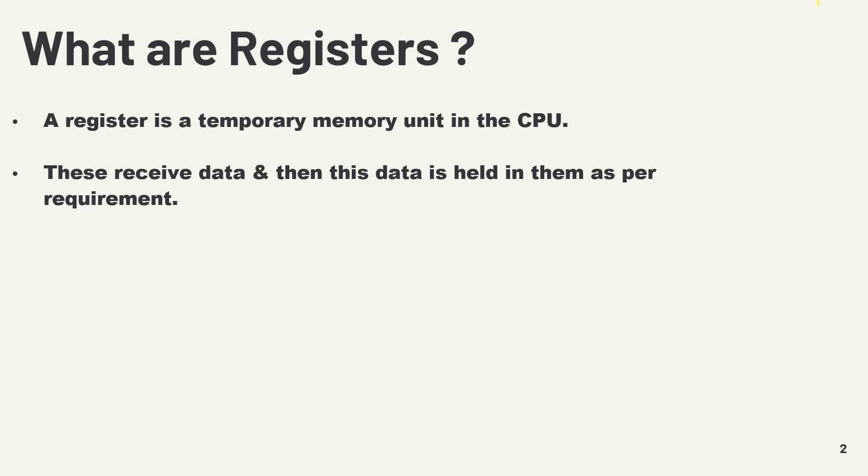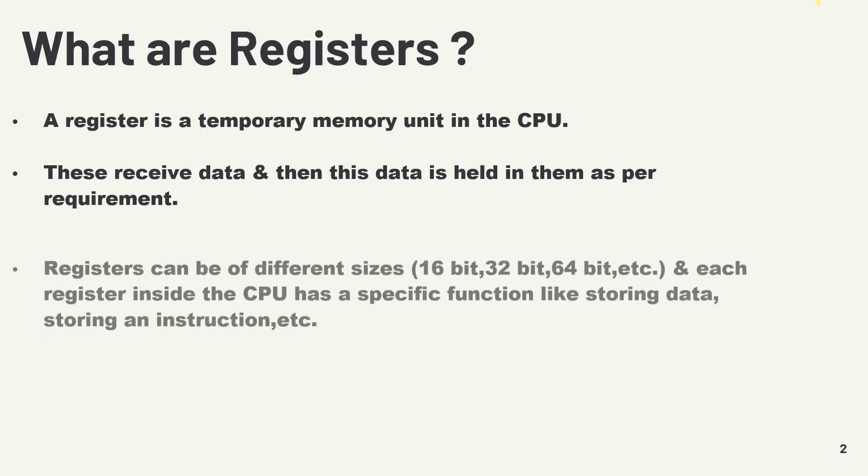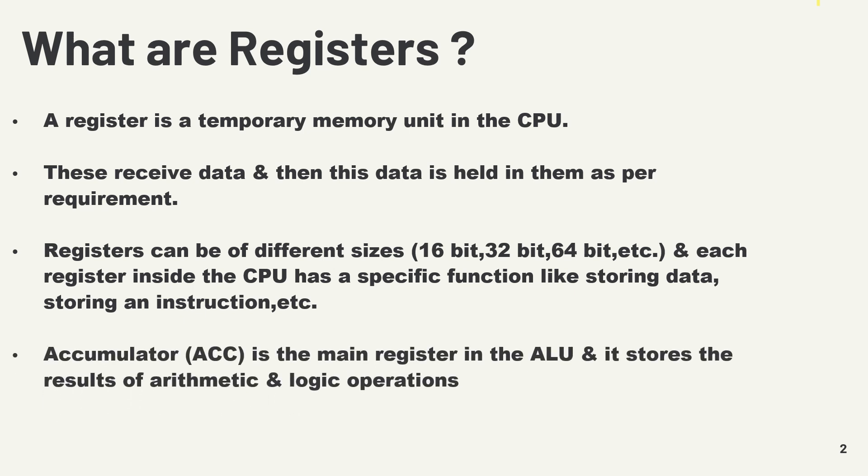The CPU needs to access registers quickly. The size of a register refers to the number of bits it can store. Registers can be of different sizes like 16-bit, 32-bit, 64-bit, etc., and these sizes can vary depending on the specific CPU architecture. The accumulator is the main register in the ALU and it stores the results of arithmetic and logic operations.